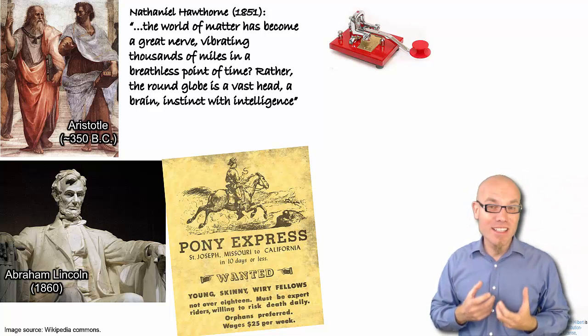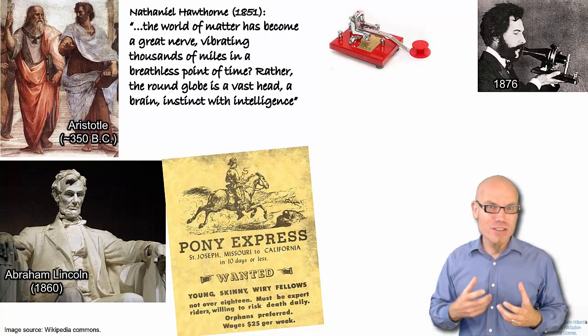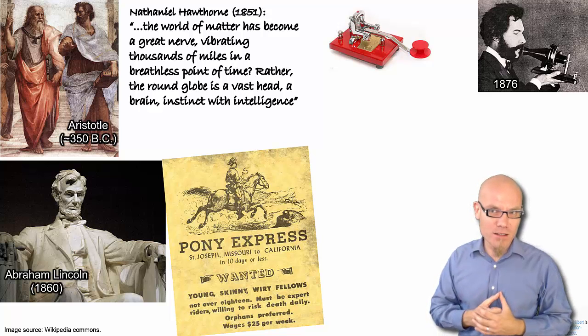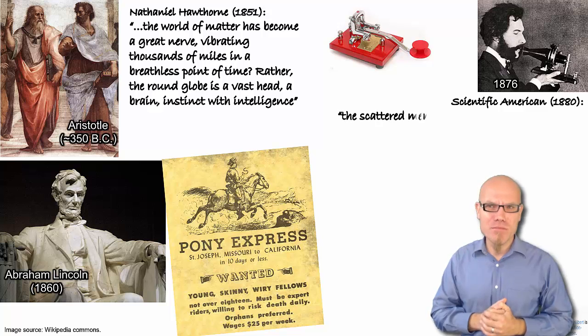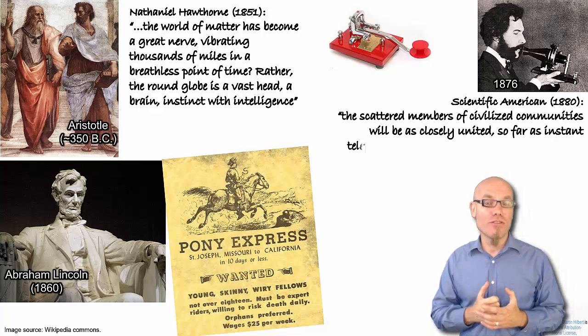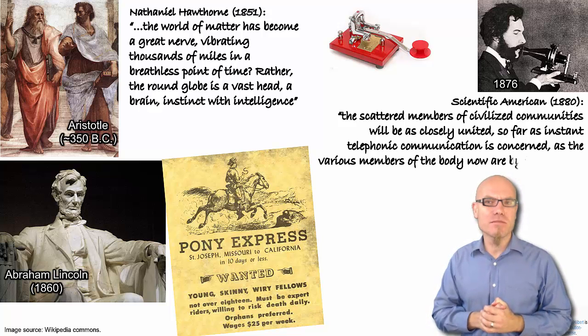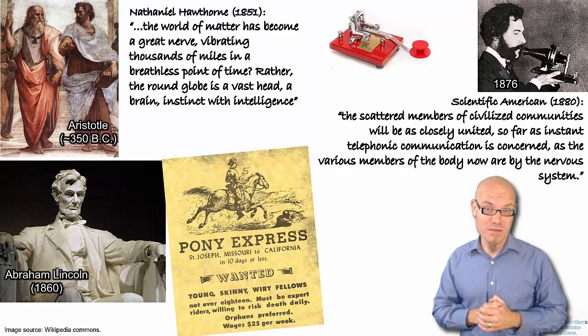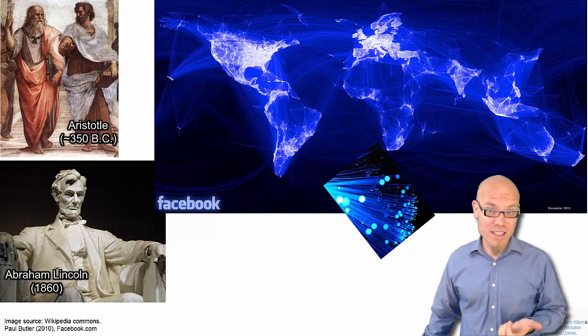Then in 1876, when Graham Bell invented the telephone, imagination started to grow wings and a recognized popular science outlet like Scientific American stated that the scattered members of civilized communities will be as closely united so far as instant telephonic communication is concerned as the various members of the body are now by the nervous system. That was 130 years ago.